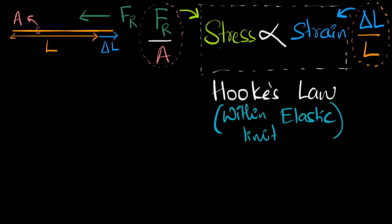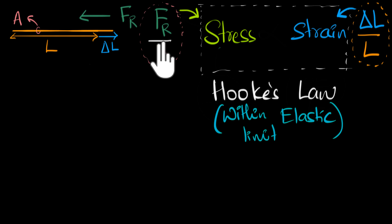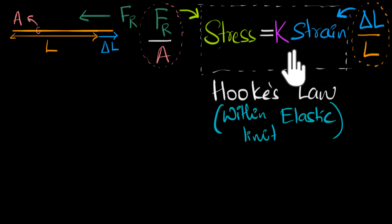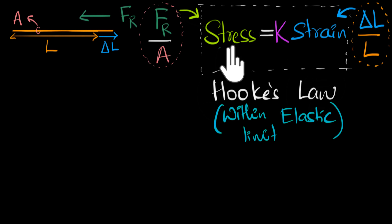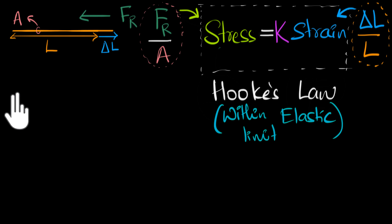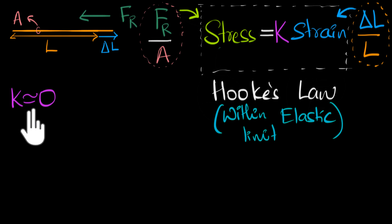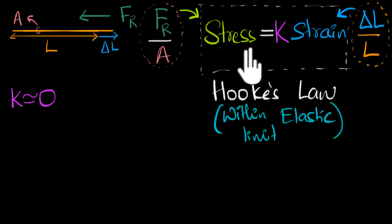We can go ahead and replace this proportionality with an equal sign and put a constant over here. Let's throw some values of K and see what happens to stress and strain. If we start with very low values of K — say K is very close to zero — then for a given strain, stress will also be very close to zero.